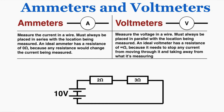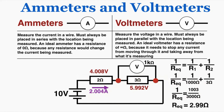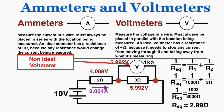Now let's look at a non-ideal voltmeter. If I give the voltmeter a very high but non-infinite resistance — say 1 kilohm (1000 ohms) — the equivalent resistance of that parallel section becomes 2.99 ohms, very close to 3 but not quite. Adding this to the 2 ohm resistor, the current is 2.004 amps. The voltage drop across the first resistor becomes 4.008 volts, so the voltage across the parallel section is 5.992 volts. The voltmeter slightly changed the voltage it was trying to measure, making it a non-ideal voltmeter. Any voltmeter with non-infinite resistance is non-ideal.